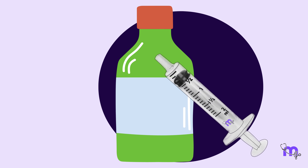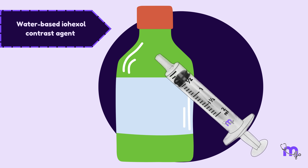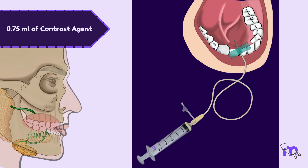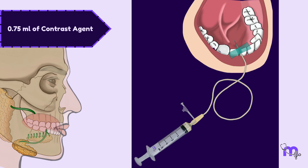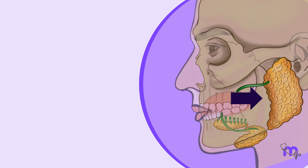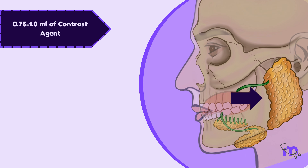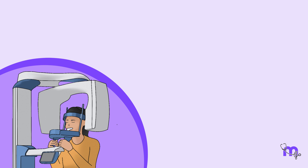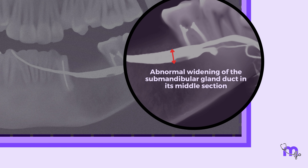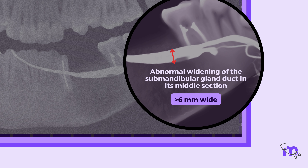A lacrimal probe can also be used for this purpose. A cannula was then inserted into the duct, connected to a syringe containing a contrast agent by an extension tube. In this case, a water-based iohexol contrast agent called Omnipec was used. Around 0.75 ml of the contrast agent was slowly injected over a few minutes until the patient felt a sense of fullness and tightness in the area around the gland. For the parotid gland, the amount of dye injected can vary between 0.75 and 1 ml. Following the contrast injection, an OPG was taken.